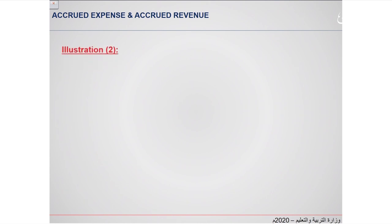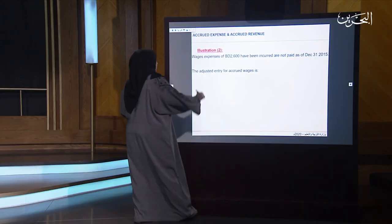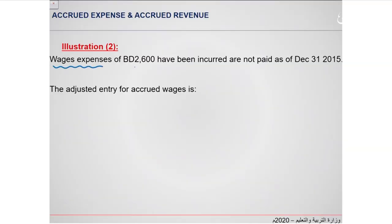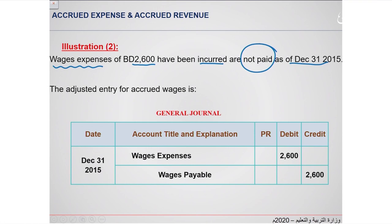Let's see example 2. There is another type: wages expense of $2,600 have been incurred but not paid on December 31, 2015. How to prepare the adjusting entries? It is direct — no calculation needed. Put December 31, 2015: wages expense on the debit side for $2,600 and wages payable on the credit side for $2,600.